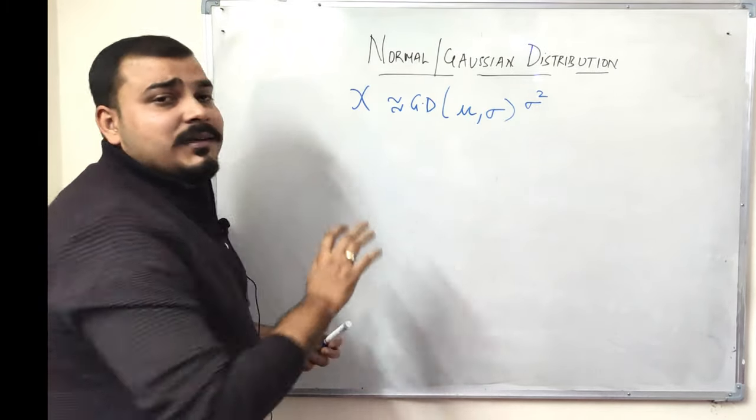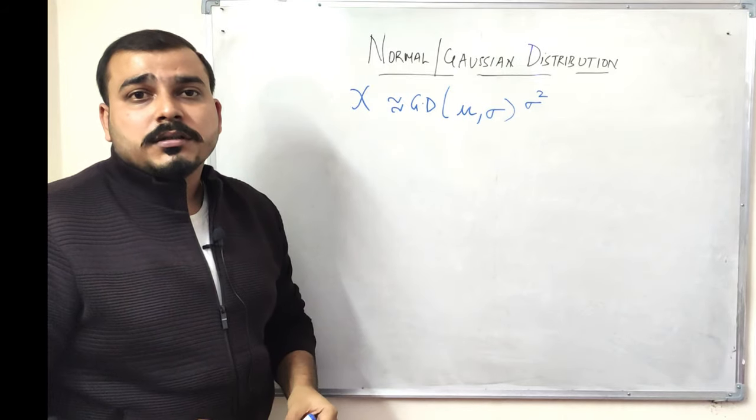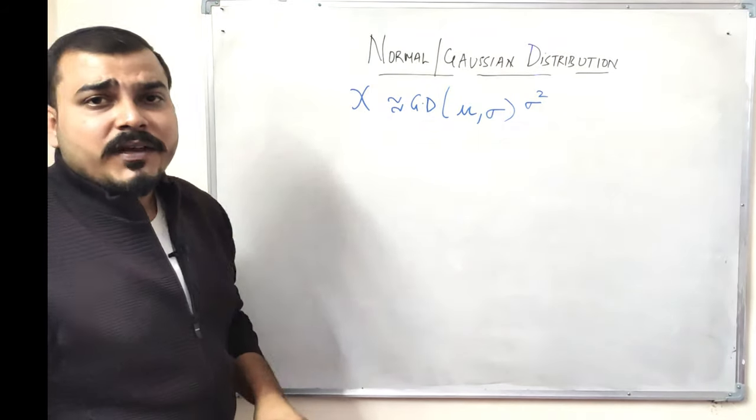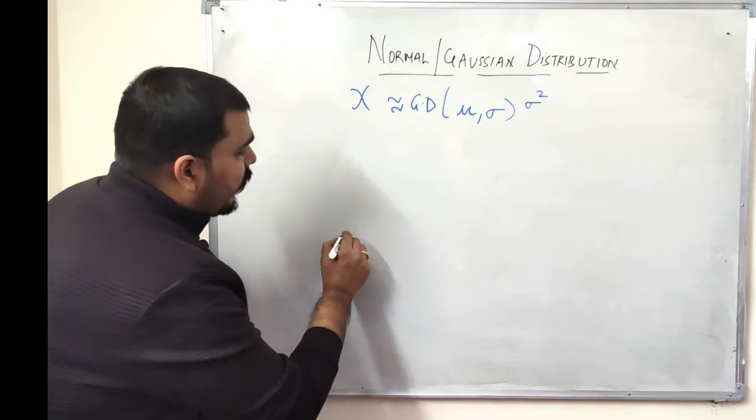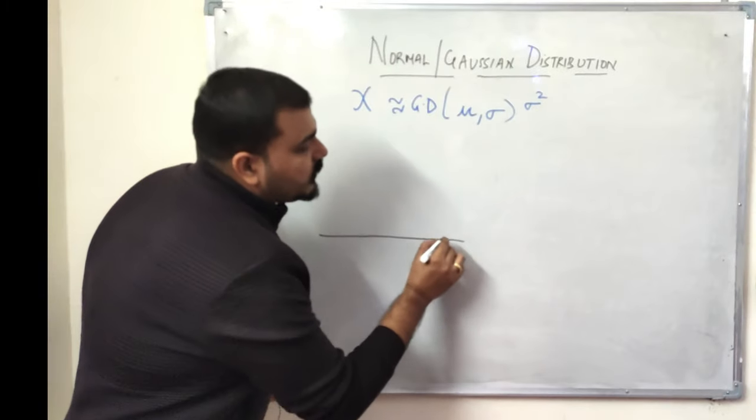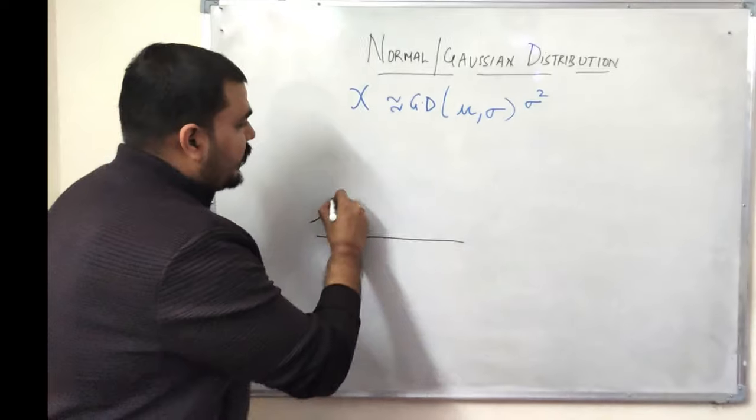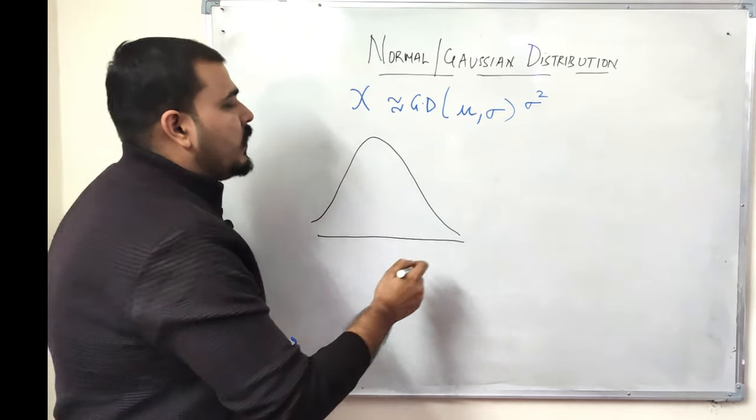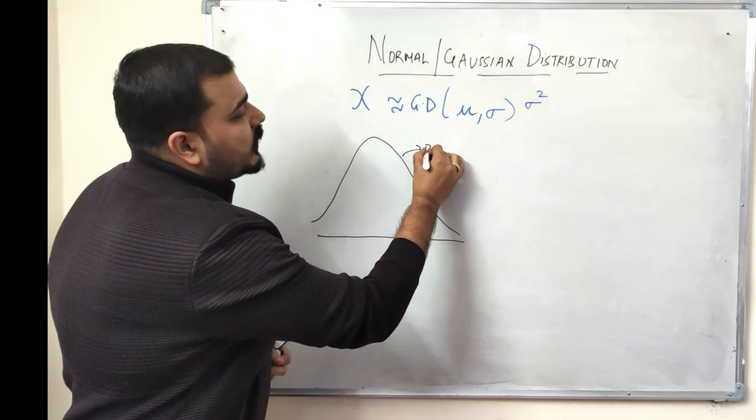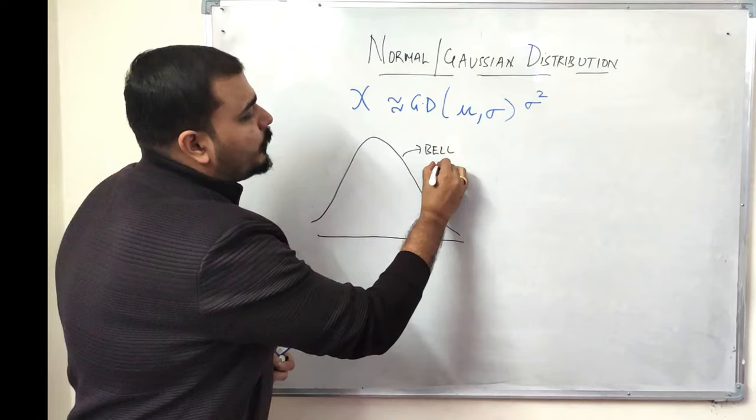Now if we know that this X variable follows a Gaussian distribution, and if we try to plot with the help of histogram and probability density function, we will be getting this kind of curve and this curve is called a bell curve.